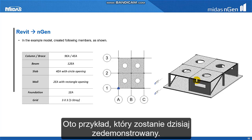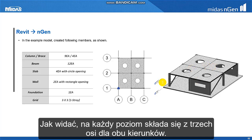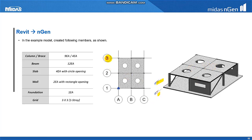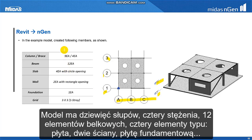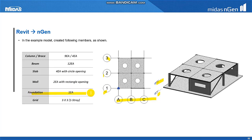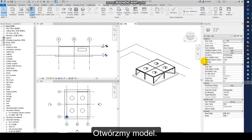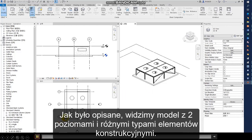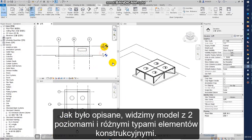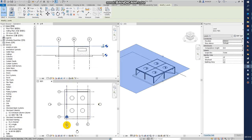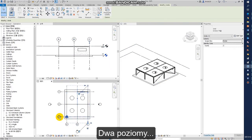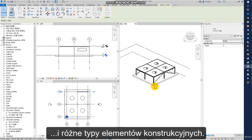Here is an example for today's demonstration. The model has three grids in both directions at each level. It includes nine columns, four braces, twelve beams, four slabs, two walls, one foundation, and additional openings — that is, a model with multiple levels, grids, and various structural members.